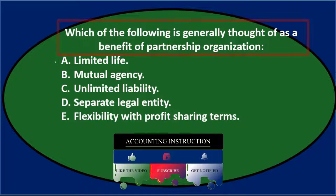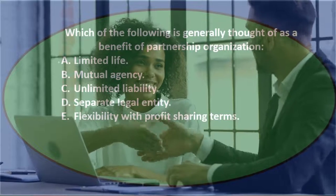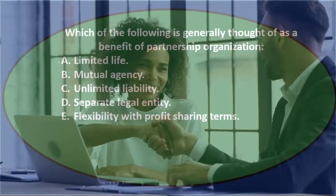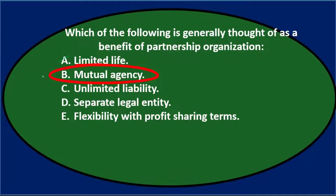Typically you would want the partnership to exist after your death — to have something to pass on — so limited life is not usually considered a benefit, even though it is a characteristic of a partnership. So I'm going to remove option A. Option B says mutual agency, and again there is a mutual agency issue.